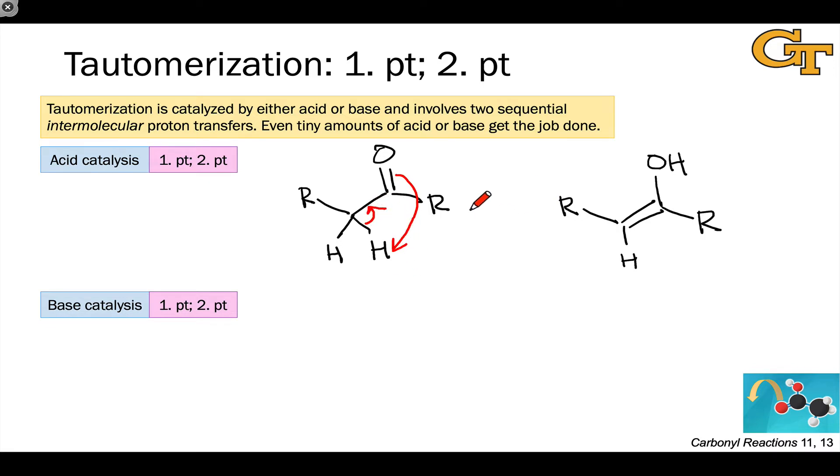So this is a fully intramolecular proton transfer that interconverts the keto and enol forms directly. This won't work because of the four-membered ring nature of the transition state and the fact that orbital overlap just doesn't work that way. The pi electrons cannot overlap with the CH sigma antibonding orbital in the way required to make this electron flow work physically. So this doesn't work.